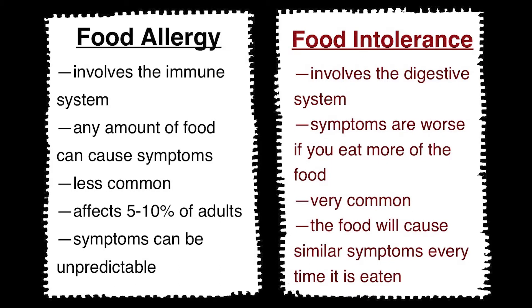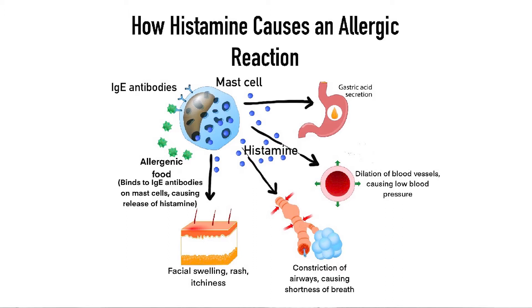There's an important distinction between food allergy and food intolerance. Food intolerance typically involves the digestive system and the amount of food ingested is directly related to the severity of symptoms. In addition, the specific food will cause similar symptoms every time it is eaten. In contrast, a food allergy involves the immune system. Food allergies are due to the action of an antibody of IgE type which is produced by our body's immune system.